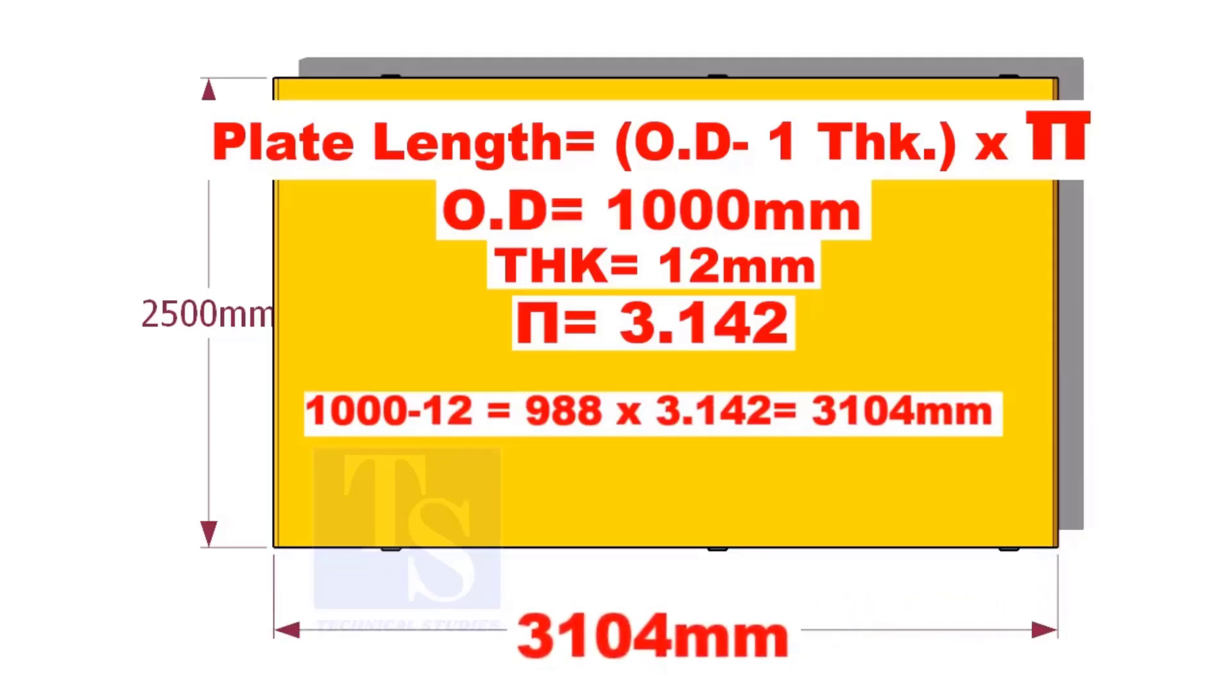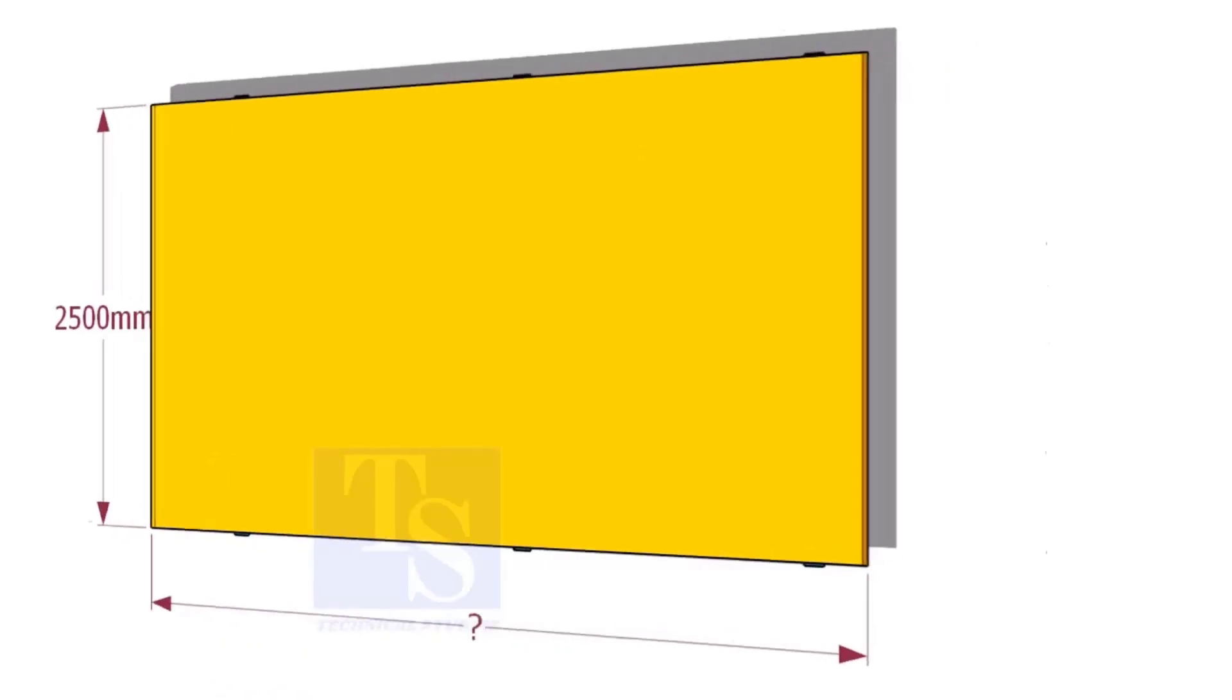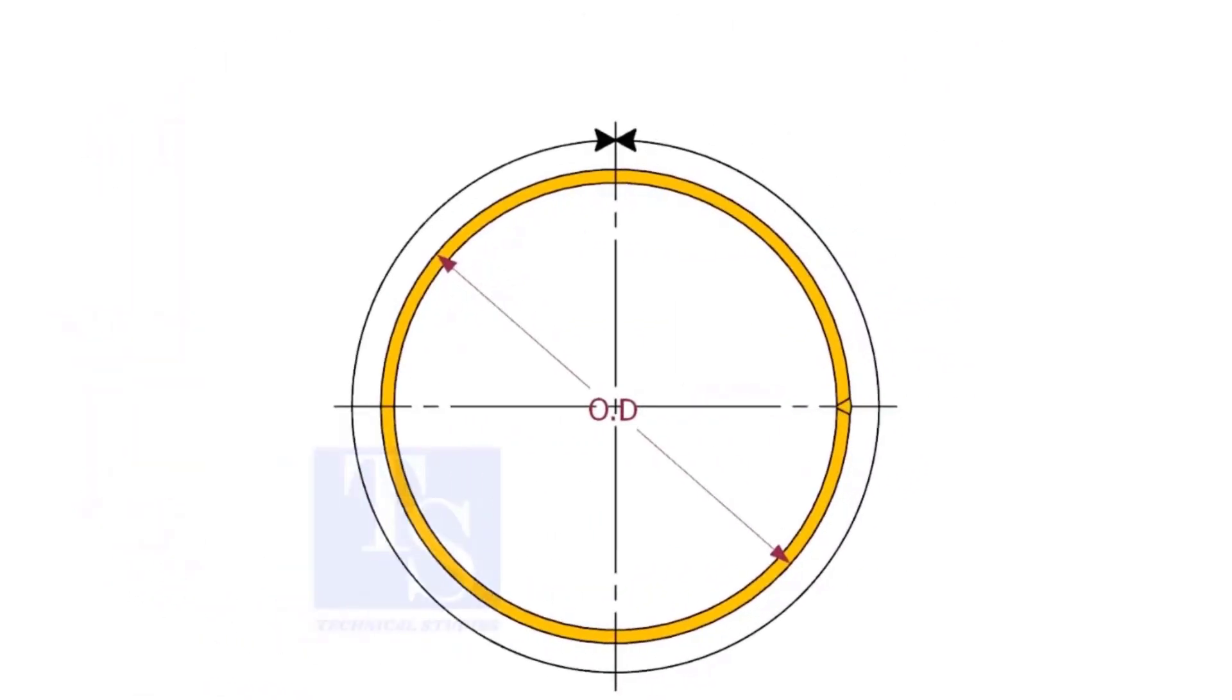If you mark this length on a 12 mm thick plate, after rolling the plate, the outer diameter of the plate will be 1000 mm and the circumference will be 3142 mm.